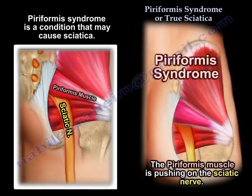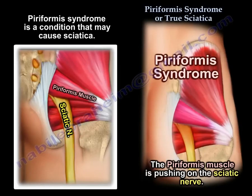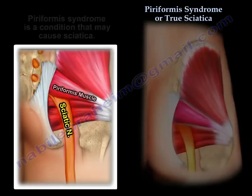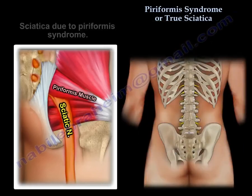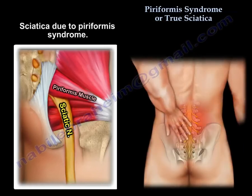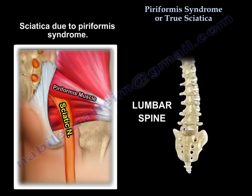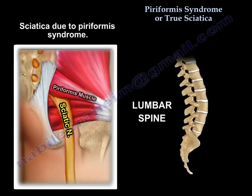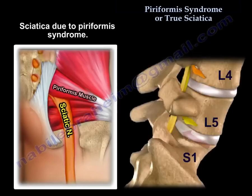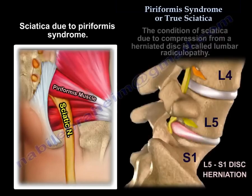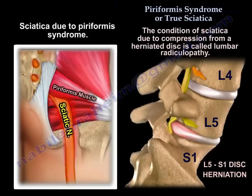So in this case, we call the condition piriformis syndrome — that is the diagnosis. But if the sciatica, which is a symptom, comes from a herniated disc, then we call the condition herniated disc and refer to the resulting sciatica as lumbar radiculopathy.